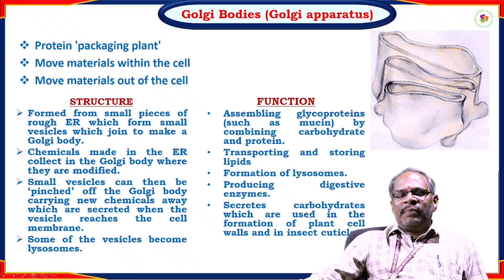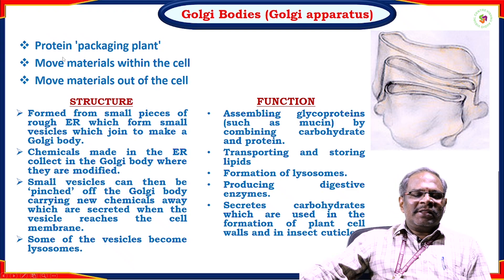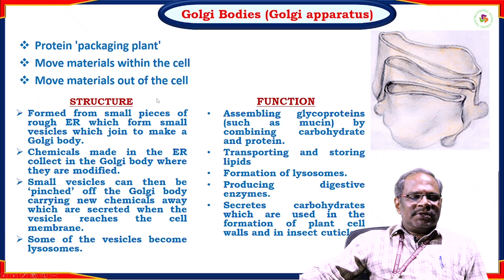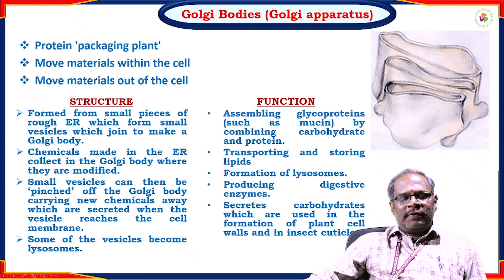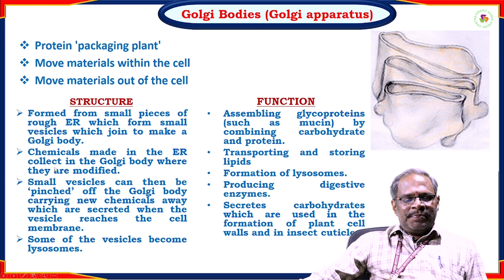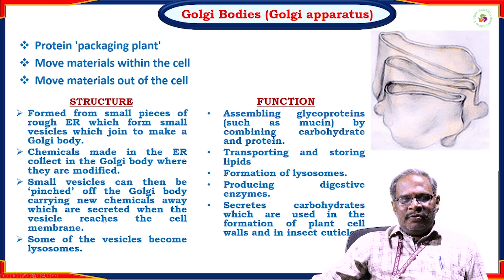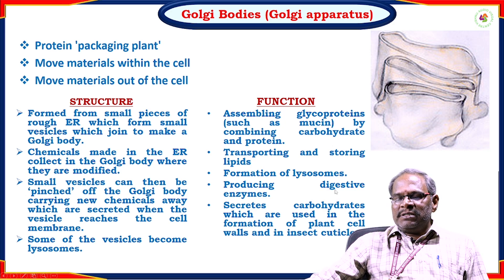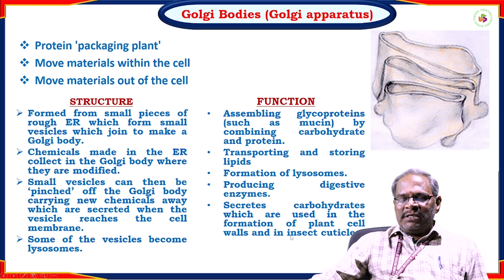Another organelle is the Golgi bodies, also called the Golgi apparatus or Golgi complex, also known as the protein packaging plant. It handles new materials within the cell and out of the cell. It is formed from small pieces of the rough endoplasmic reticulum forming small vesicles. Chemicals from the endoplasmic reticulum collect in the Golgi body where they are modified, and small vesicles are pinched off carrying new chemicals that are secreted when the vesicle reaches the cell membrane. Some vesicles become lysosomes. Major functions: assembling glycoproteins by combining carbohydrates and proteins, transporting and storing lipids, formation of lysosomes, production of digestive enzymes, and secreting carbohydrates used in plant cell walls and insect cuticles.